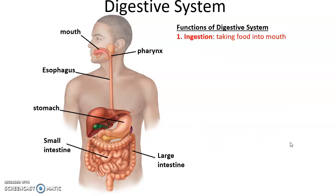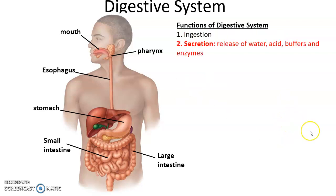Functions of the digestive system include ingestion — this is taking food into the mouth. There are lots of things secreted for the digestive system: acids, buffers, enzymes, water, things like saliva, gastric juices in the stomach.